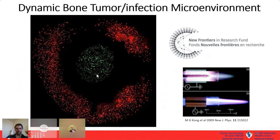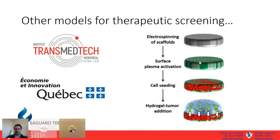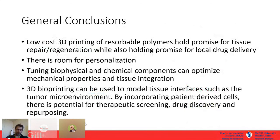Other work involves collaborating with Transmedtech, the MAE project, and Saguaro Technologies in collaboration with Abdella Agi and Michel Wertheimer at École Polytechnique. We're working on commercializing a system to interface tumor and tissue subtypes using electrospun mats surface-activated with different plasma types, as a high-throughput screening tool, which is looking quite promising.